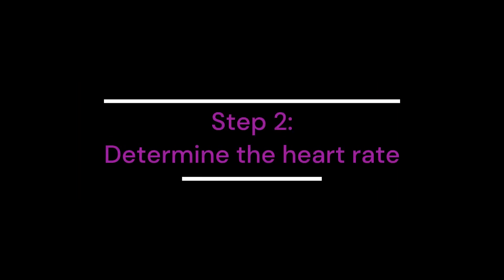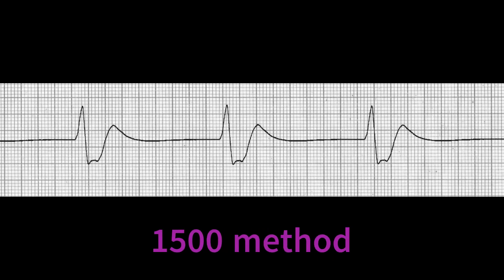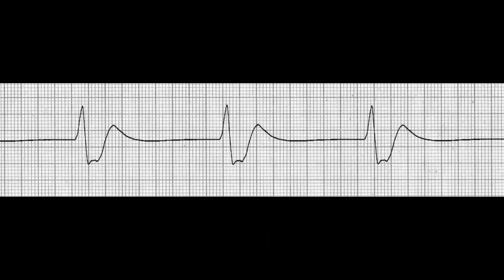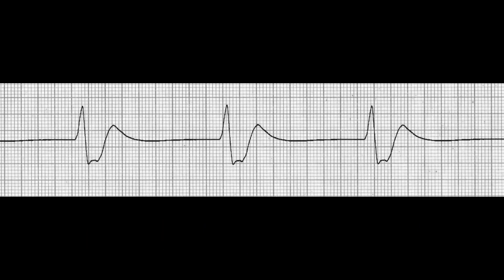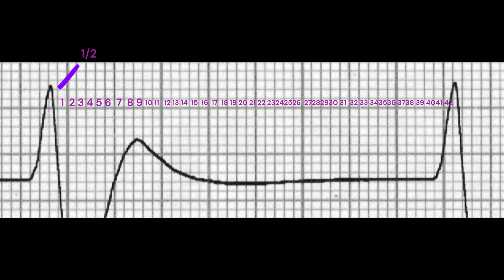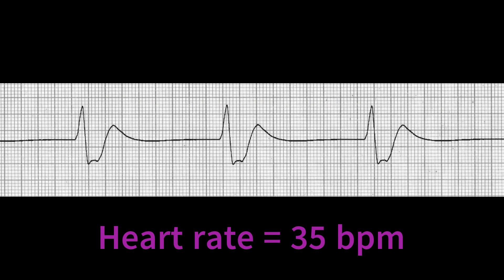Step 2: Determine the Heart Rate. Idioventricular rhythms have a slow rate of 20 to 40 beats per minute. In this example, we can use the 1500 method to determine the heart rate. Take note that we can use this method on regular rhythms only, which this example is. The number of small blocks in the R to R interval is 42.5. We divide 1500 by 42.5 and we get 35.2, or rounded down to 35 beats per minute.